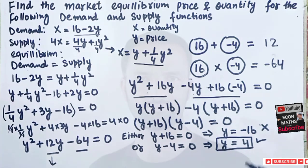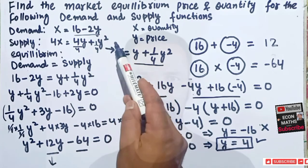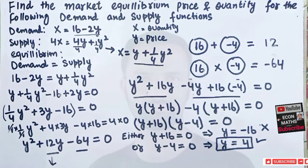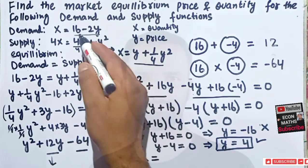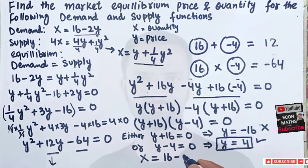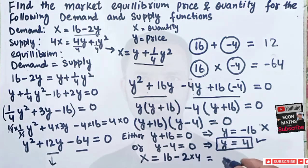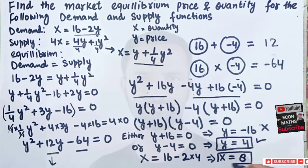To find equilibrium quantity, we plug Y = 4 into the demand function: X = 16 - 2(4) = 16 - 8 = 8. So our equilibrium quantity is X = 8 and our equilibrium price is Y = 4.